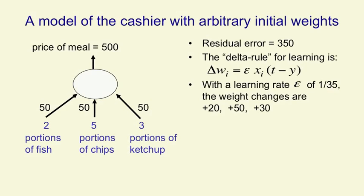If we make the learning rate be 1 over 35, so the math stays simple, then the learning rate times the residual error for this particular example is 10. Our change in the weight for fish will be 2 times 10. We'll increase that weight by 20. Our change in the weight for chips will be 5 times 10, and our change in the weight for ketchup will be 3 times 10.